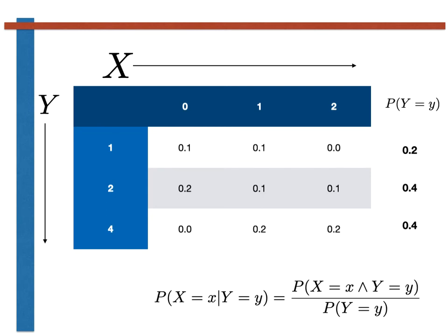We can thus calculate the conditional probability that X equals 0 given Y equals 1 as 0.5. Similarly, the conditional probability that X equals 1 given Y equals 1 is 0.5, and the conditional probability that X equals 2 given Y equals 1 is 0. What we have done here is divide the elements in the first row of the table by the probability that Y equals 1.